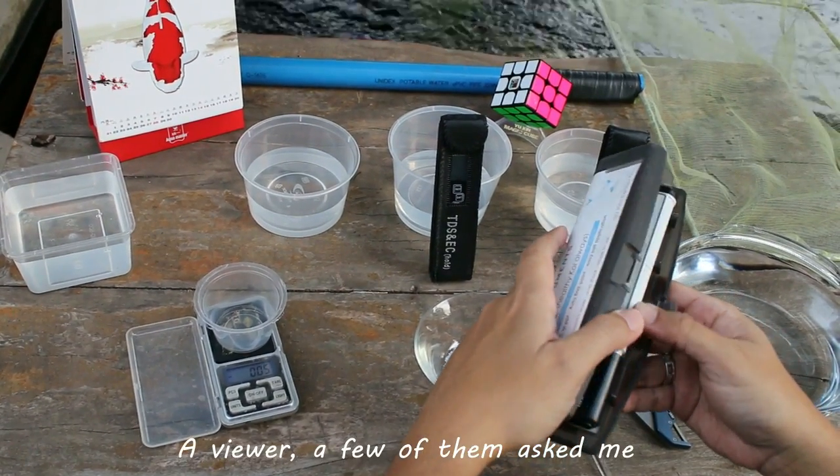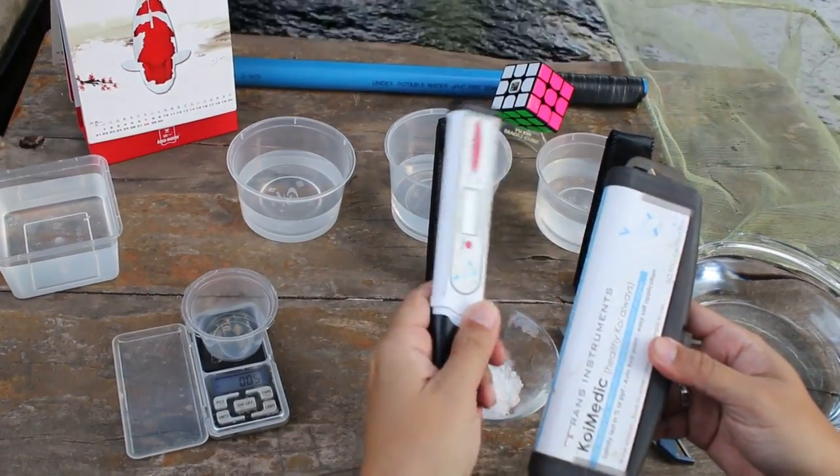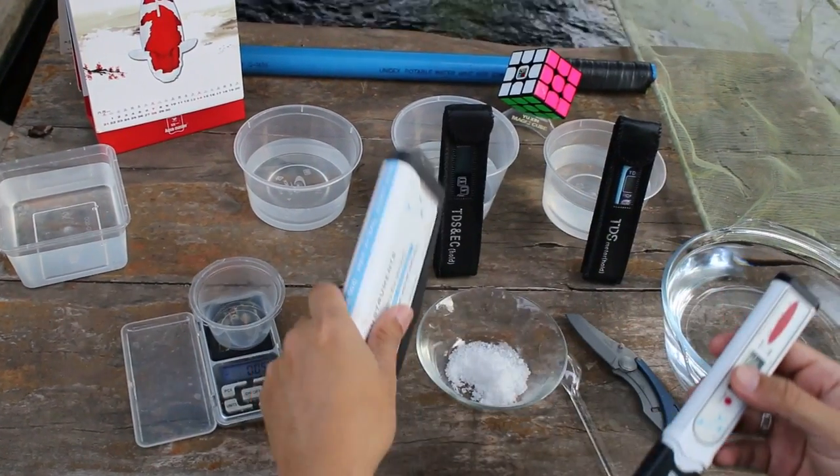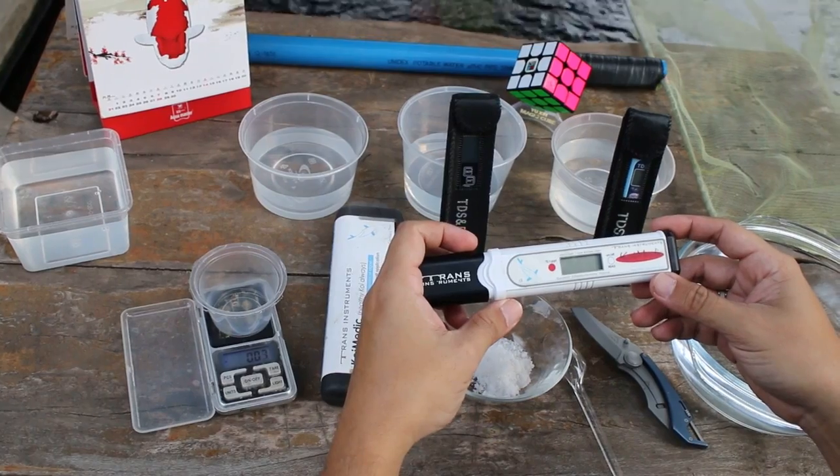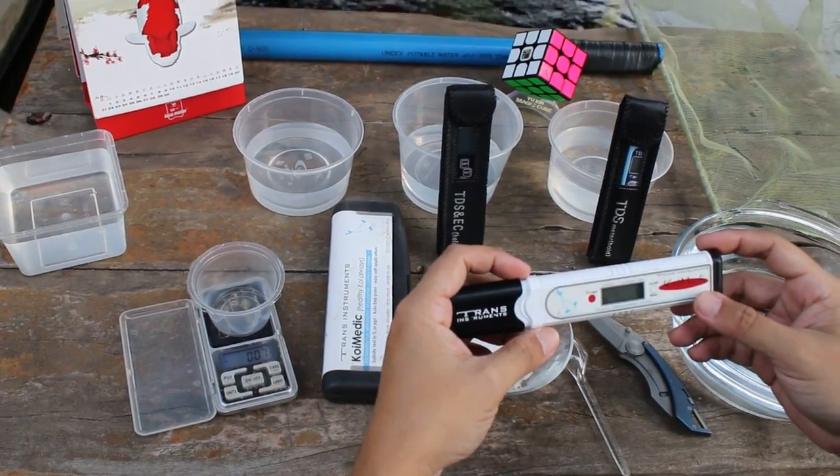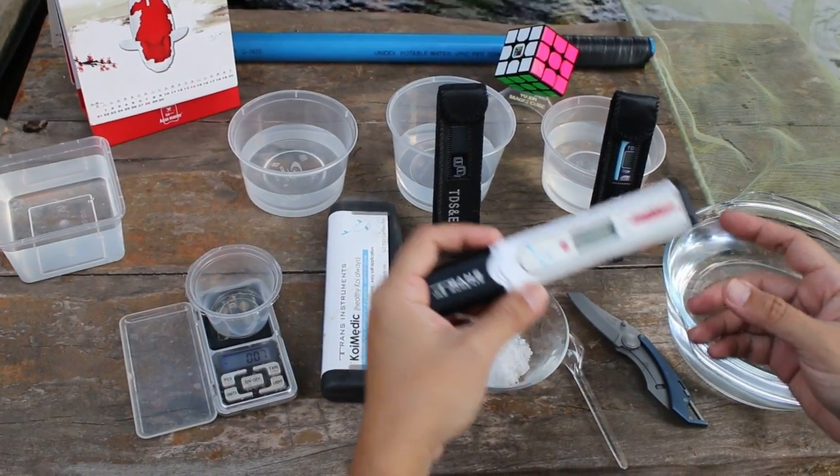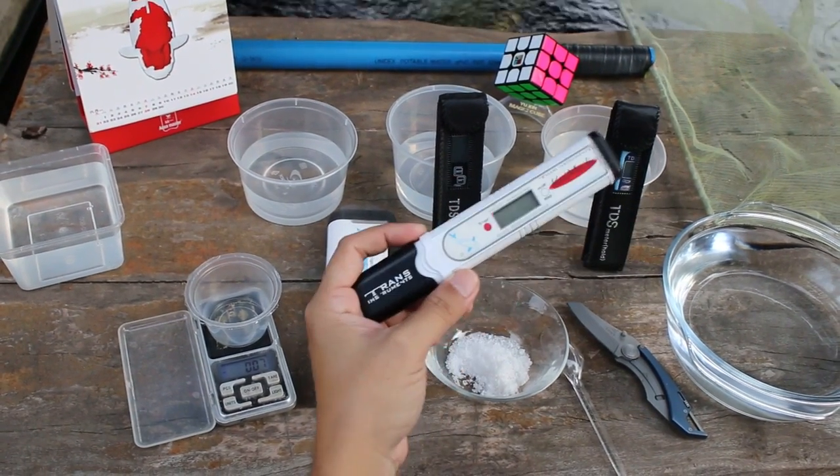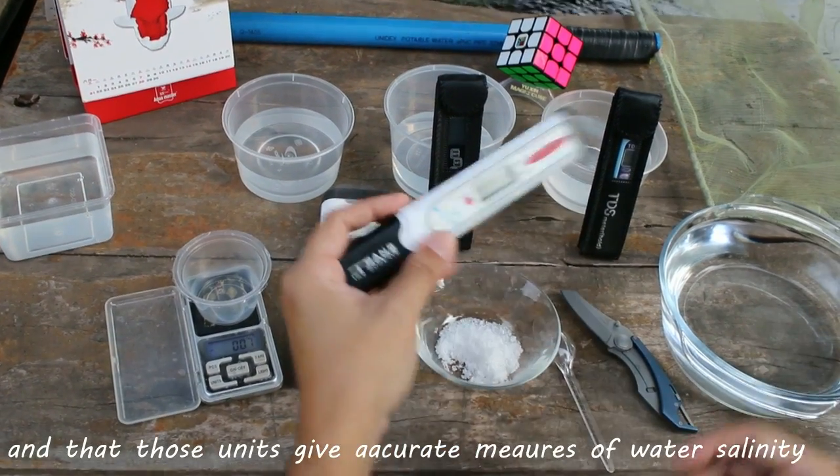A viewer, a few of them, asked me where did I buy my salt meter and I told them I bought it from a seller online. After I mentioned my salt meter, the next question that popped out was: are the cheap salt meters that are sold online capable of doing what these much more expensive ones can do? You want to make sure before buying it that those units are safe to use and that those units give accurate measures of water salinity.